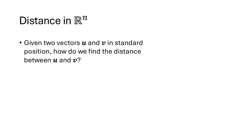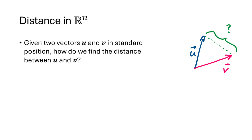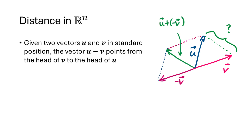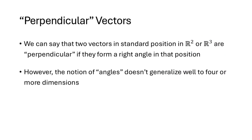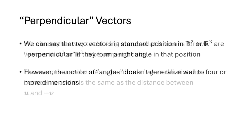If we have two vectors in Rn, the distance between u and v is the distance between their heads when placed in standard position. We compute this as the norm of u minus v. Now, we can say two vectors in R2 or R3 are perpendicular if they form a right angle in standard position, but that notion of angles doesn't generalize well to higher dimensions, so we need another way to characterize perpendicularity.